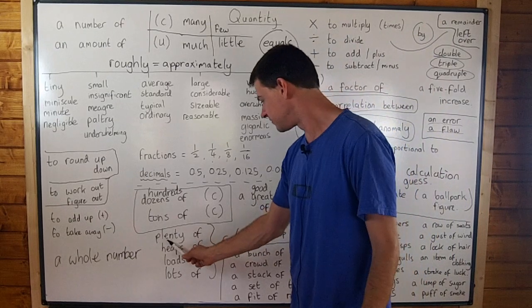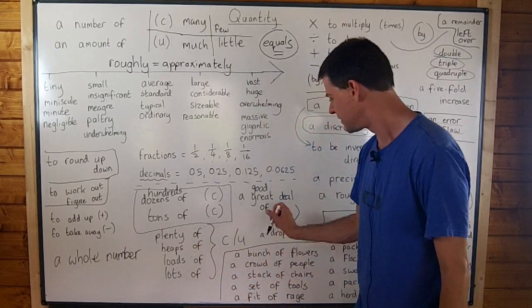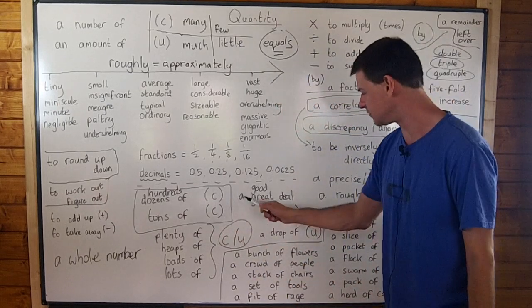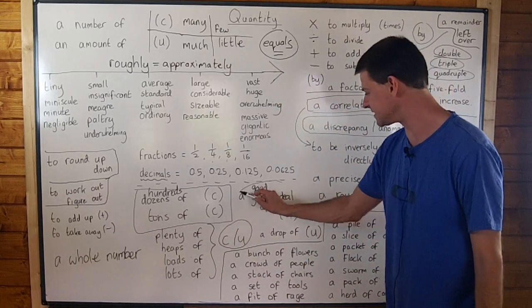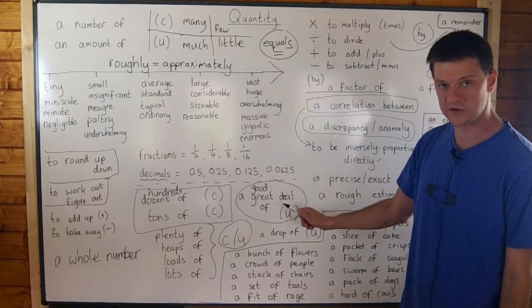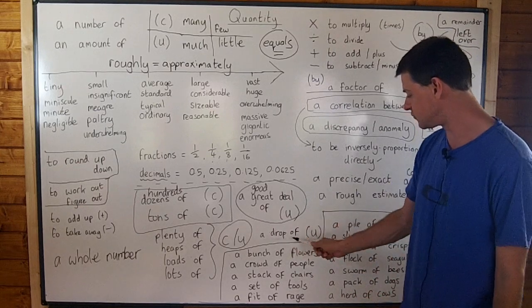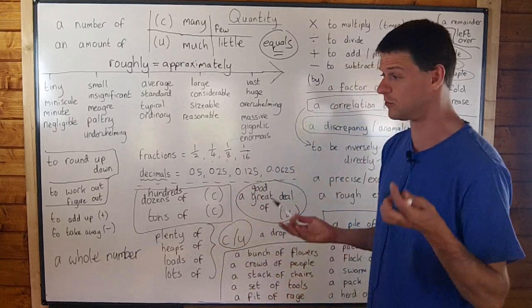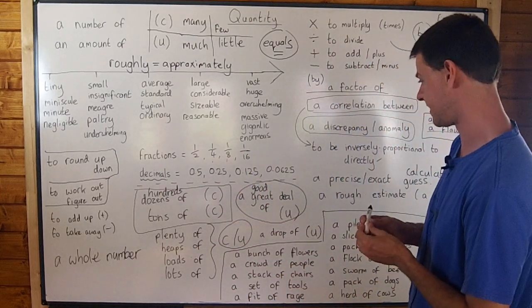Use plenty of, heaps of, loads of, or lots of for countable and uncountable nouns. You can use a good deal of or a great deal of for uncountable. That one's quite formal. Very good one to use in your written essays. And you can say a drop of for uncountable liquids. Usually you have a drop of water, a drop of wine, something like that.